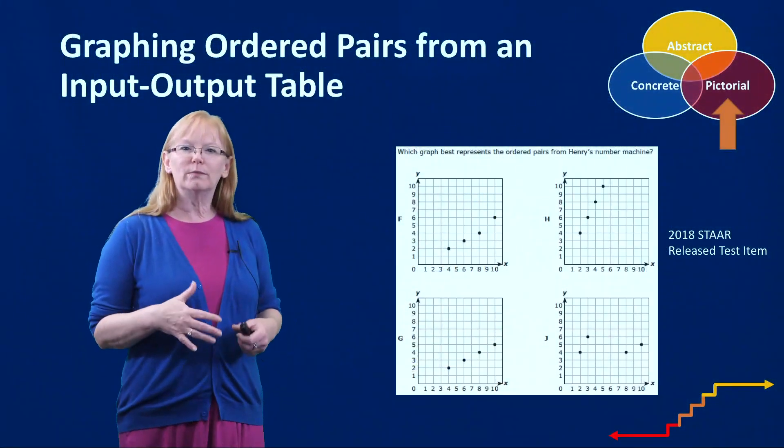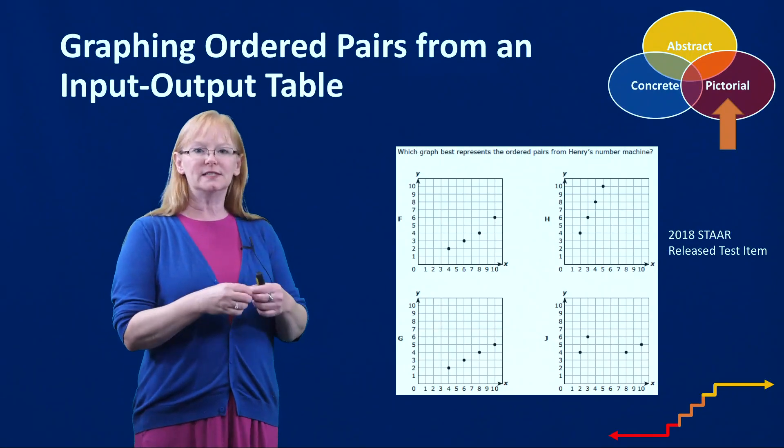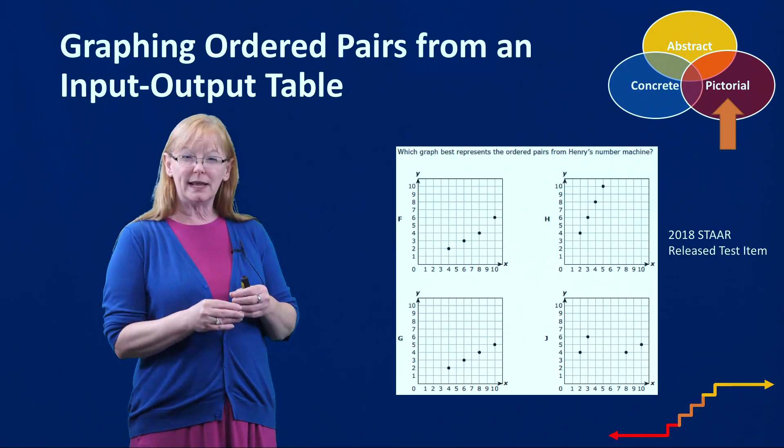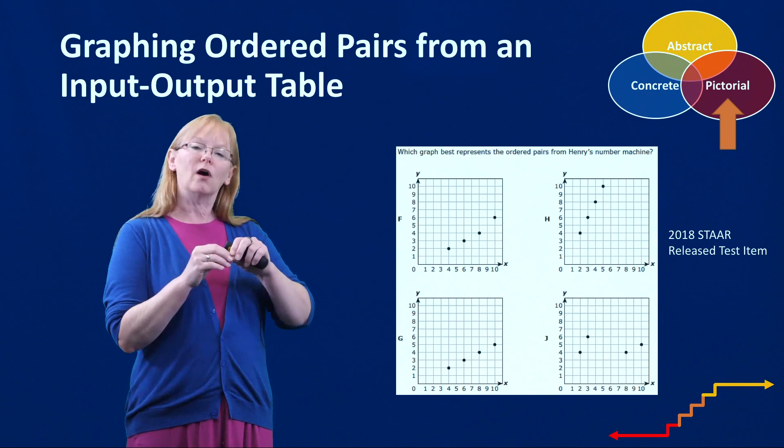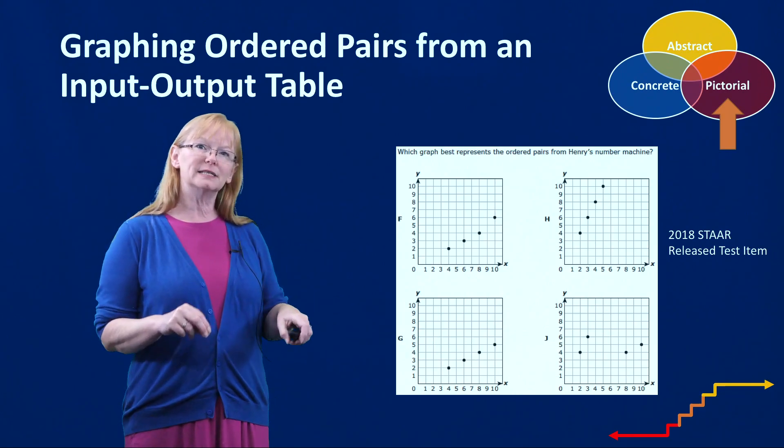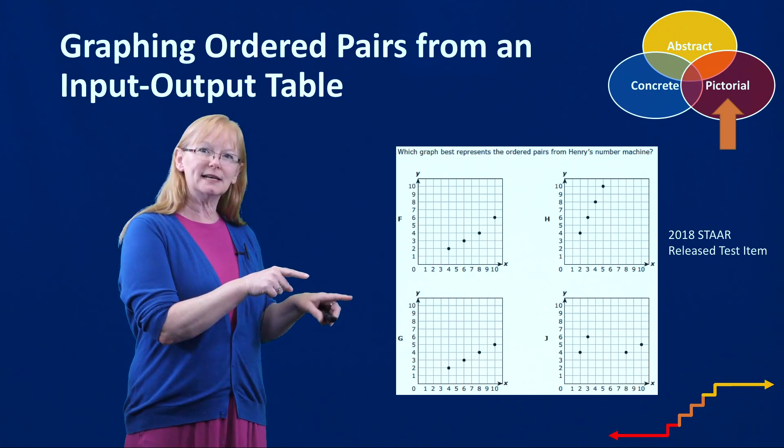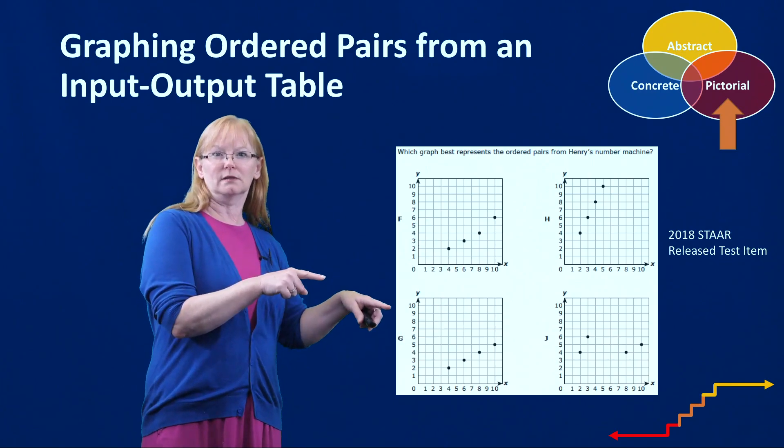The reason it's so important to really be emphasizing that when you use that input-output table with a rule that all those points are going to be on a line is because when you hit a standardized test, you get answer choices that are like this.